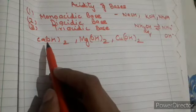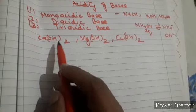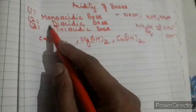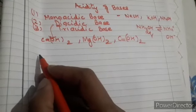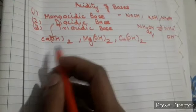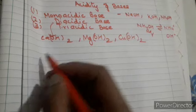So per molecule of any base you will get two OH ions. Who will come in this? Diabasic base.